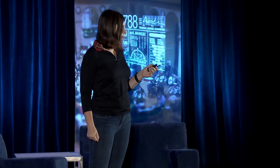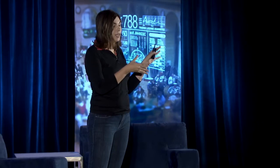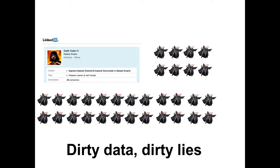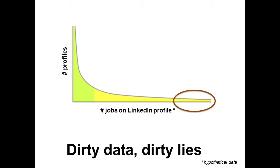For example, on LinkedIn there are all these fake accounts that we've closed, but they're still in the database. So if you don't take them out, you have this army of Darth Vaders boosting up the defense and space industry. Or, for example, you might have some skewed distribution in your data. It might make sense to include people who have 200 positions on their LinkedIn profile, or it might make sense to threshold those people out. We have to put the data under a microscope and check every flag, category, and date, and decide what it means.